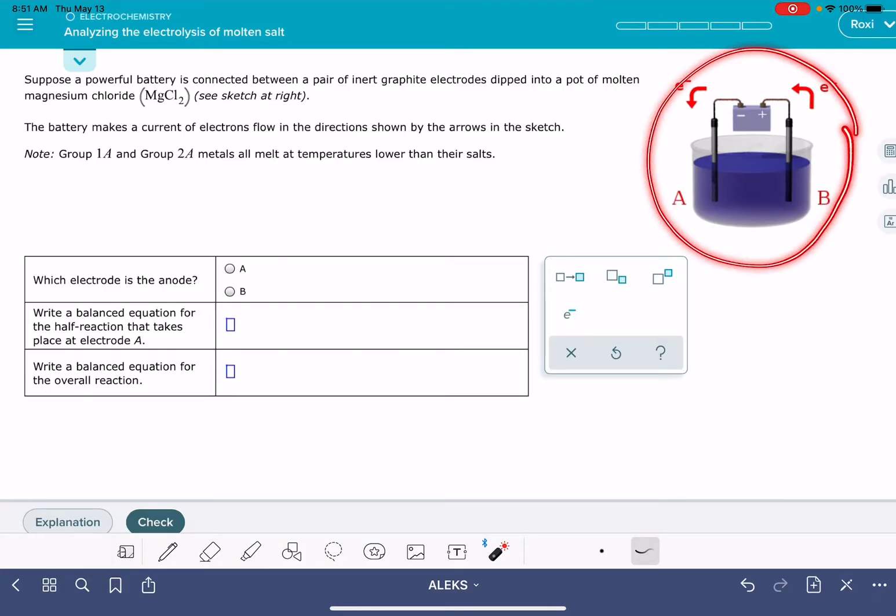For this problem, we're given the picture of a voltaic cell. This is not the same thing as a galvanic cell. We're being told the content of the voltaic cell. This one has molten magnesium chloride, MgCl2. Molten just means that it's been melted. So we have MgCl2 that is a liquid.